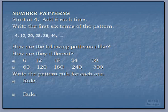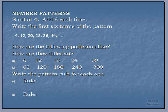How are the following patterns alike and how are they different? We look at our first pattern: 6, 12, 18, 24, and 30. Our next pattern is: 60, 120, 180, 240, and 300.